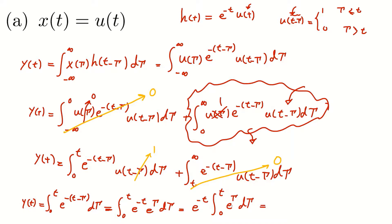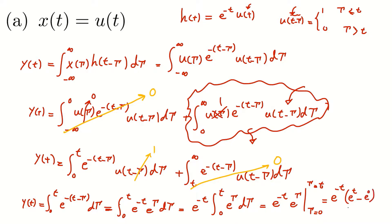We know that the integral of e^τ equals e^τ itself. So we have e^(-t) times e^τ evaluated from τ = 0 to τ = t. This equals e^(-t) times (e^t minus e^0). And since e^0 = 1, we get e^(-t) times (e^t - 1).